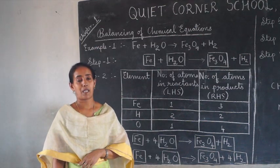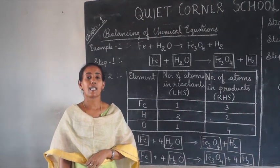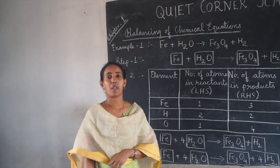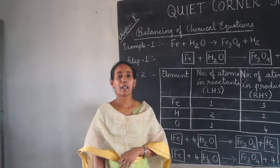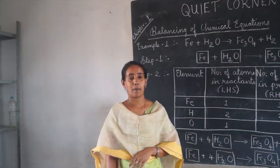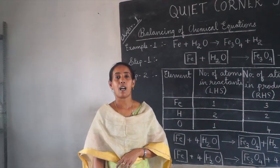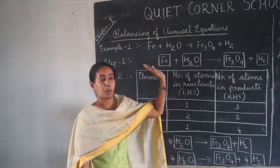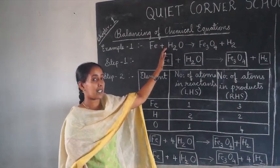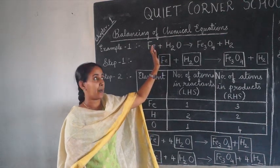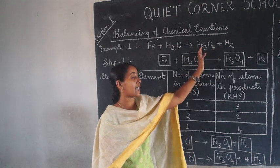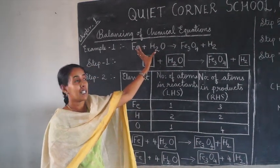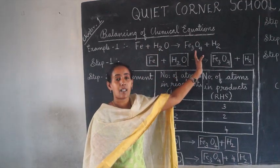A chemical equation is a symbolic representation of a chemical reaction. Chemical reactions are reactions in which new substances are formed. In a chemical equation, two things are present: the reactants and the products. The substances written on the left side are called reactants, and the substances or compounds formed after the reaction are known as the products. The left-hand side is the reactant side and the right side is the product side.